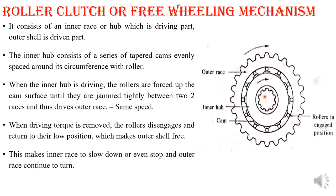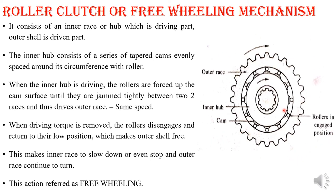Since this makes the inner race slow down or even stop while the outer race continues to run, this action is known as freewheeling. The outer race will still be in continuous rotation, but the inner race will be at decreased speed or might be stopped. That action is known as freewheeling. This is how your overrunning clutch works.